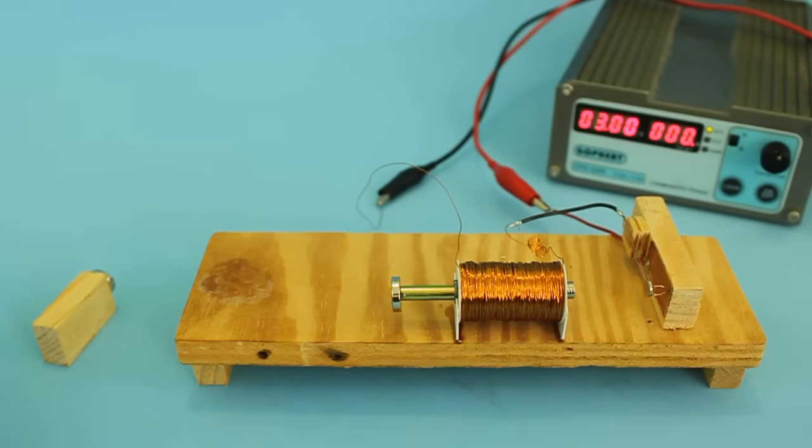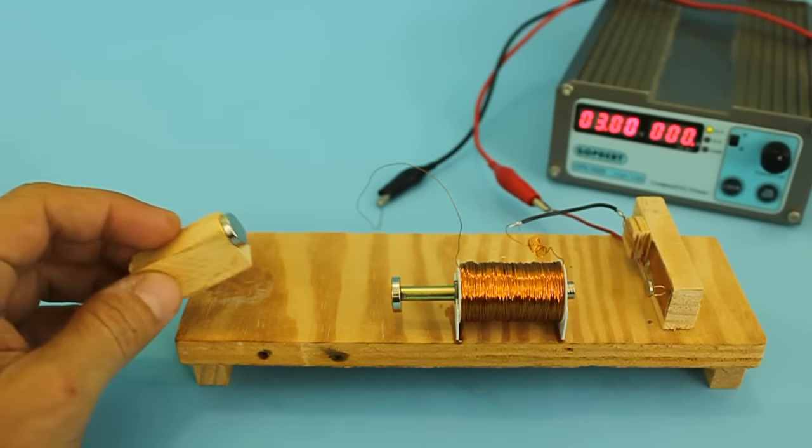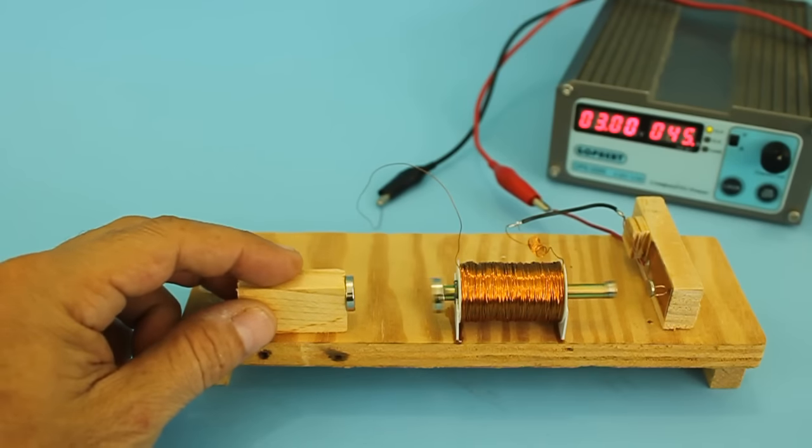We can play a little with the voltage and the position of the magnet. Here I have three volts, and we have a short stroke.